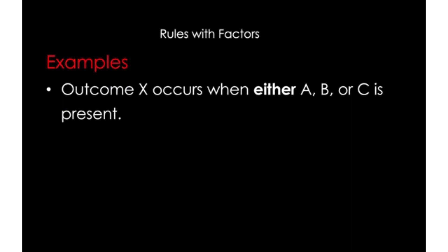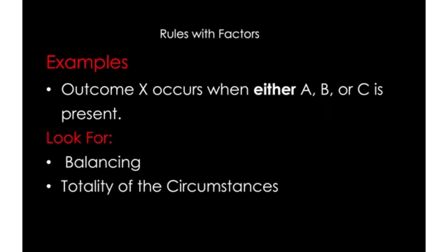Now let's talk about rules with factors. Factors are areas of inquiry for the court to consider, but not all factors need to be present for the outcome to occur. For example: 'outcome x occurs when either a, b, or c is present.' Notice the language: in an elements test we use the word 'and,' whereas for factors we use 'or,' because not all factors need to be present. Good indications that you're dealing with a factor test include balancing tests, totality of the circumstances tests, or sliding scale rules.